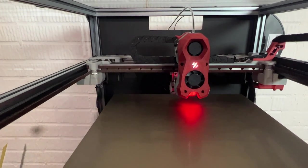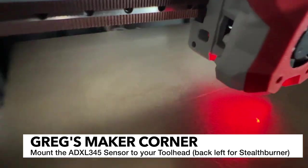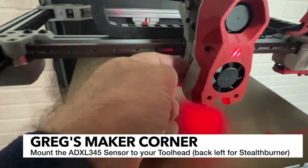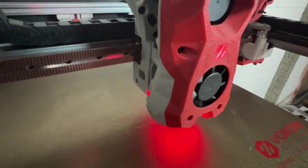You can see here that I've got a Stealthburner. There is a little spot on the side of the tool head right here. There's actually two heat inserts and that's where I'm going to be mounting the ADXL sensor.